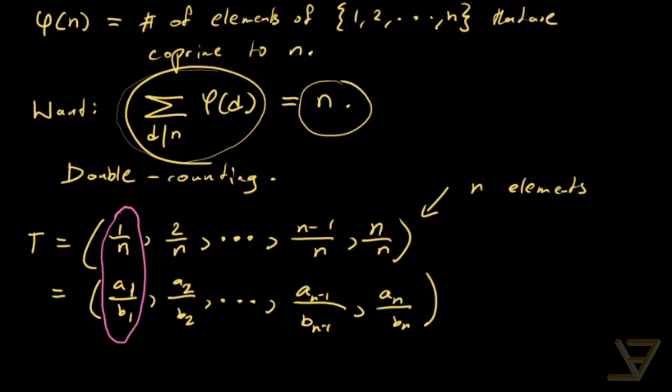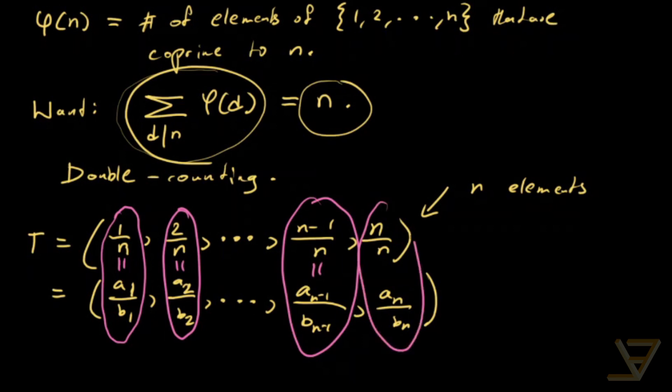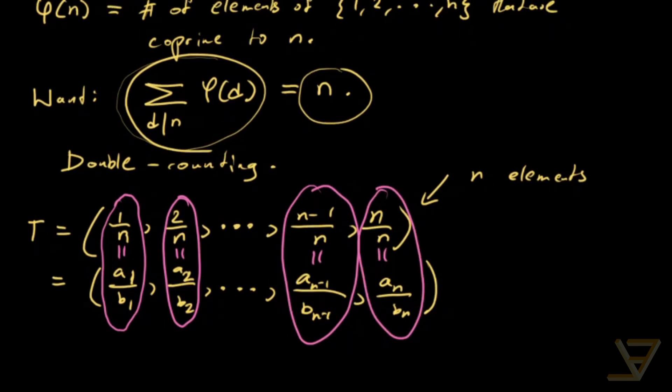But the rest aren't so clear because we don't know what n is. These two correspond to each other. These two are equal. These two are equal. These two correspond to each other. And these two correspond to each other.